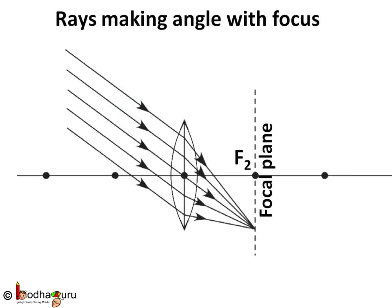When parallel rays making angle with principal axis fall on lens, they would converge at a point on focal plane or appear to be diverging from a point on focal plane. The focal plane is a plane perpendicular to the principal axis at the focus.